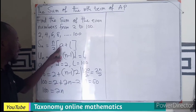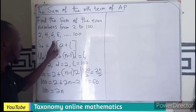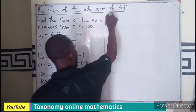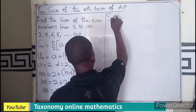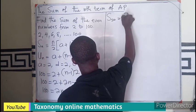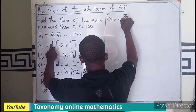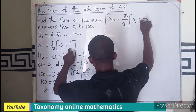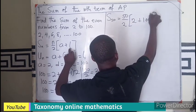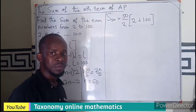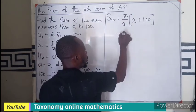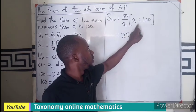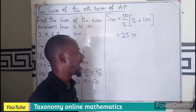So now we can substitute since we know the n here, the first term and the last term. So in this case, the sum of the first is 50 times equals to 50 as n over 2 times a, which is 2, plus last term, which is 100. So this is going to be 25 times. If you multiply this, you are going to get 102.